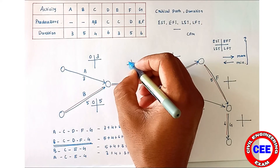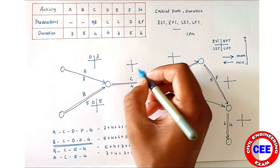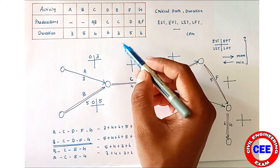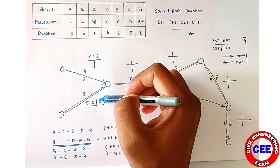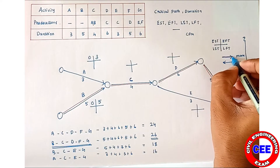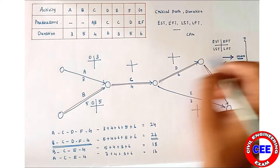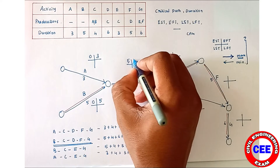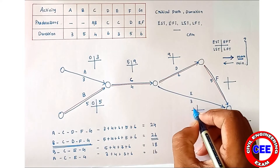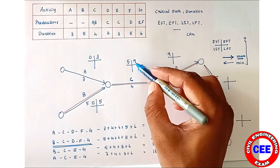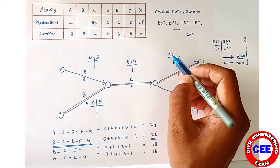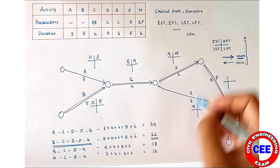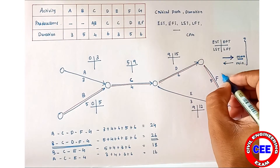Now we can calculate the EST of C activity. For C, we need the EFT of its preceding activities A and B, which are 3 and 5. Since we are going in the forward direction, we take the maximum, which is 5. So EST of C = 5, and EFT of C = 5 + 4 = 9. Since C's EFT becomes the EST of both D and E, we put 9 for both. So EFT of D = 9 + 6 = 15, and EFT of E = 9 + 3 = 12.